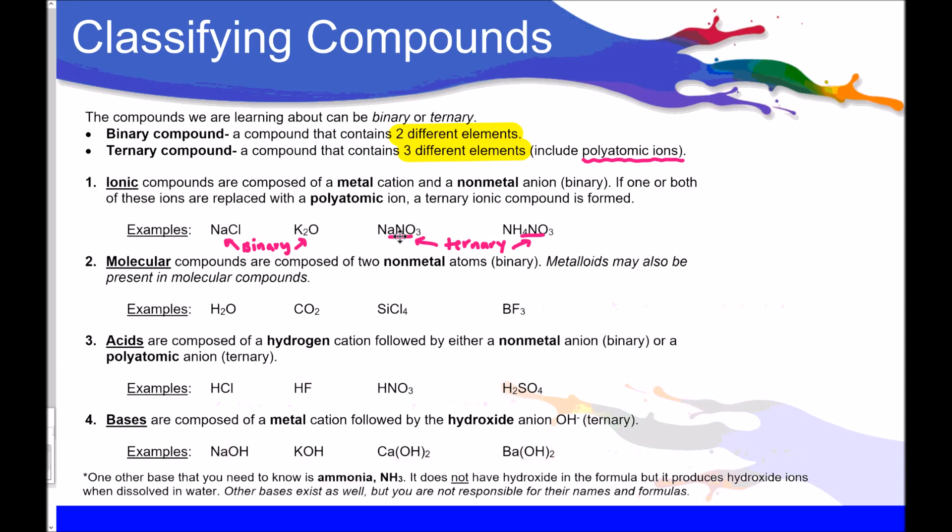Our next type are molecular compounds. These molecular compounds are composed of two nonmetal atoms, and sometimes metalloids are present. What's nice about molecular compounds is they're always going to be binary. So water, CO2, BF3, those are all examples of molecular compounds because all these guys are made up of nonmetals and sometimes metalloids. So when you're classifying these four different types, it's important to note that you're looking at what they're made of. So ionic has a metal and a nonmetal. Molecular compounds are nonmetals only.